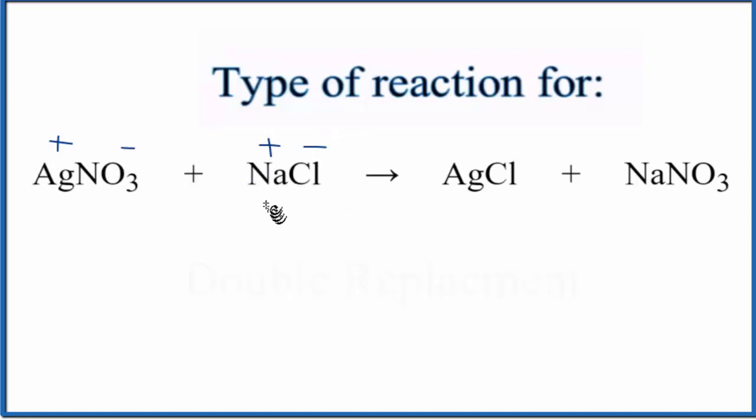That means that we will have a double displacement reaction, and the positives, they're going to switch places. So the silver is going to come over and it's going to bond with the Cl. We'll get AgCl. The sodium, that'll come over. It's going to bond with the nitrate. We get NaNO3.